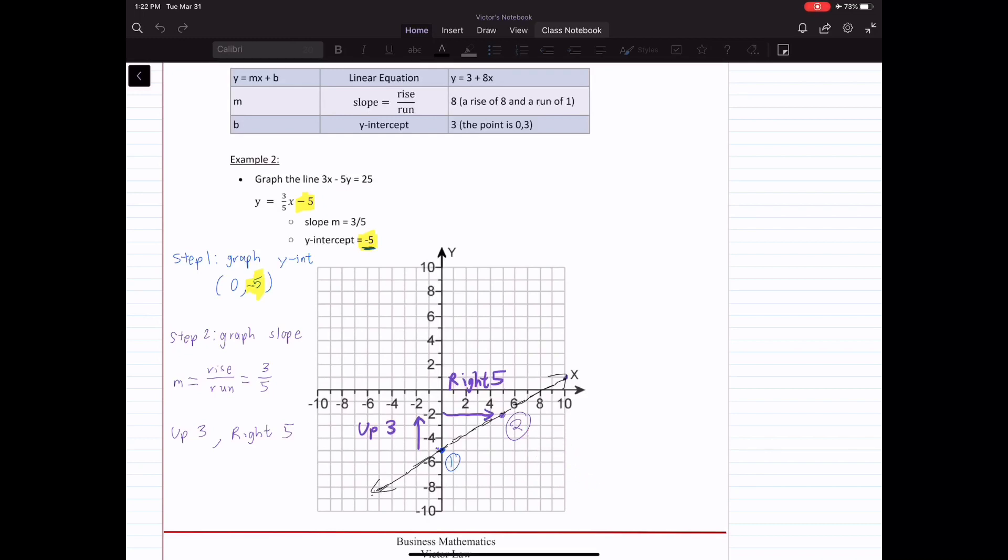Once you have those two coordinates, once you have the y-intercept and the next coordinate, we can connect the dot, and then we extrapolate it. We extend the line, and we're done.